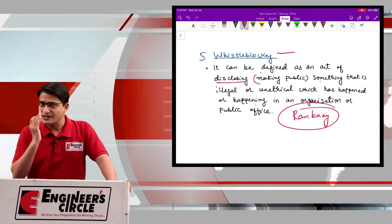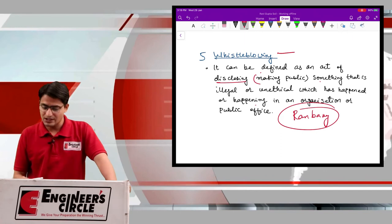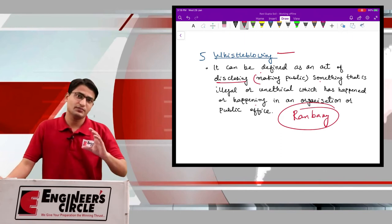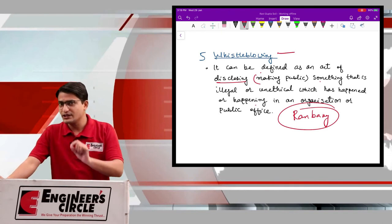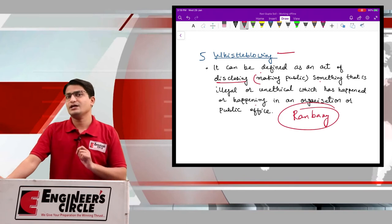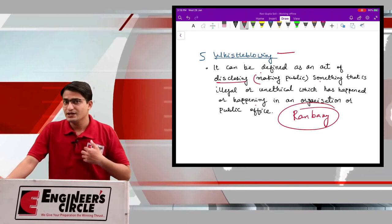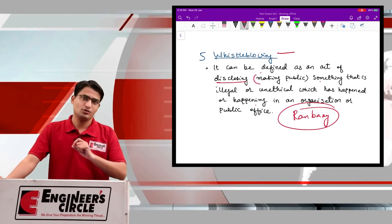So why is this an ethical issue? Because unethical conduct happens in the organization and some person is disclosing about this. But one most important aspect of whistleblowing is that the person who is disclosing the information will bear the brunt of losing the job.